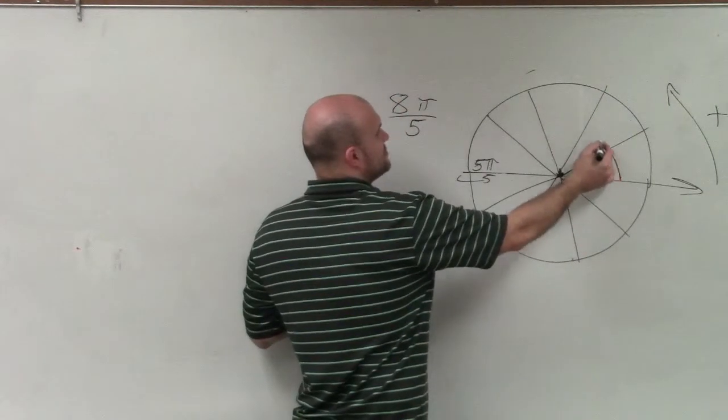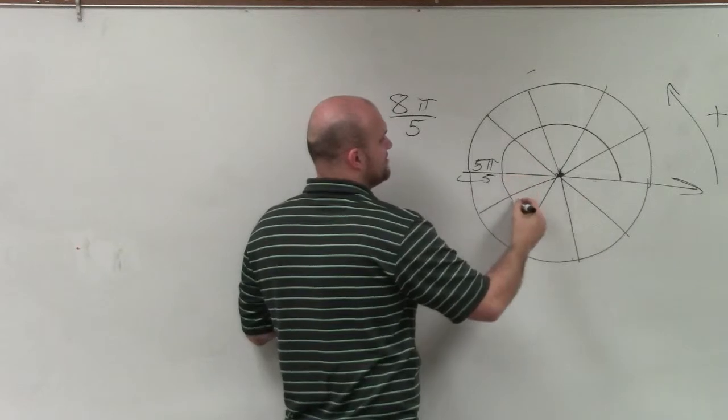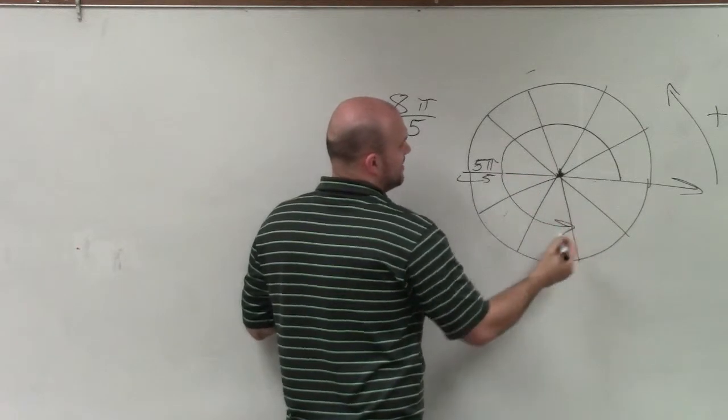So π over 5, 2π over 5, 3π over 5, 4π over 5, 5π over 5, 6π over 5, 7π over 5, and 8π over 5.